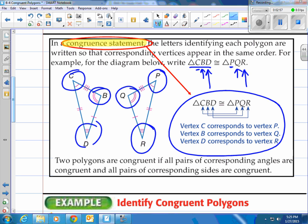Two polygons are congruent if all pairs of corresponding angles are congruent and all pairs of corresponding sides are congruent. You might call it just the same or equal. And that's congruent in geometry.